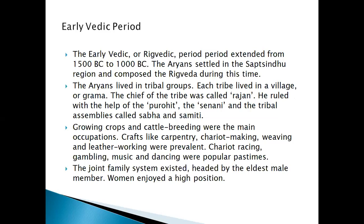The early Vedic people lived in the region called Saptasindhu, which consists of modern Haryana and undivided Punjab. It was watered by seven rivers: the Indus, Jhelam, Chenab, Ravi, Vyar, Katsuj, and Saraswati. The Saraswati has dried up since.